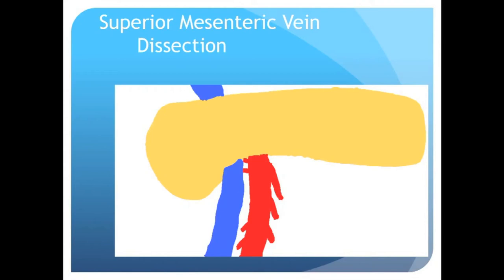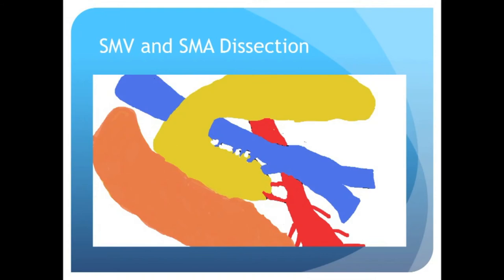The lesser sac is widely opened, exposing the entire pancreas, the superior mesenteric vein, and the superior mesenteric artery inferiorly. A different view exposes the neck of the pancreas. The relationship between the neck of the pancreas and the superior mesenteric vein is illustrated in this animation. One can see the small vessels from the superior mesenteric vein that supply the uncinate and head of the pancreas. Two arterial branches, named the inferior and superior pancreaticoduodenal vessels, are illustrated here in red.